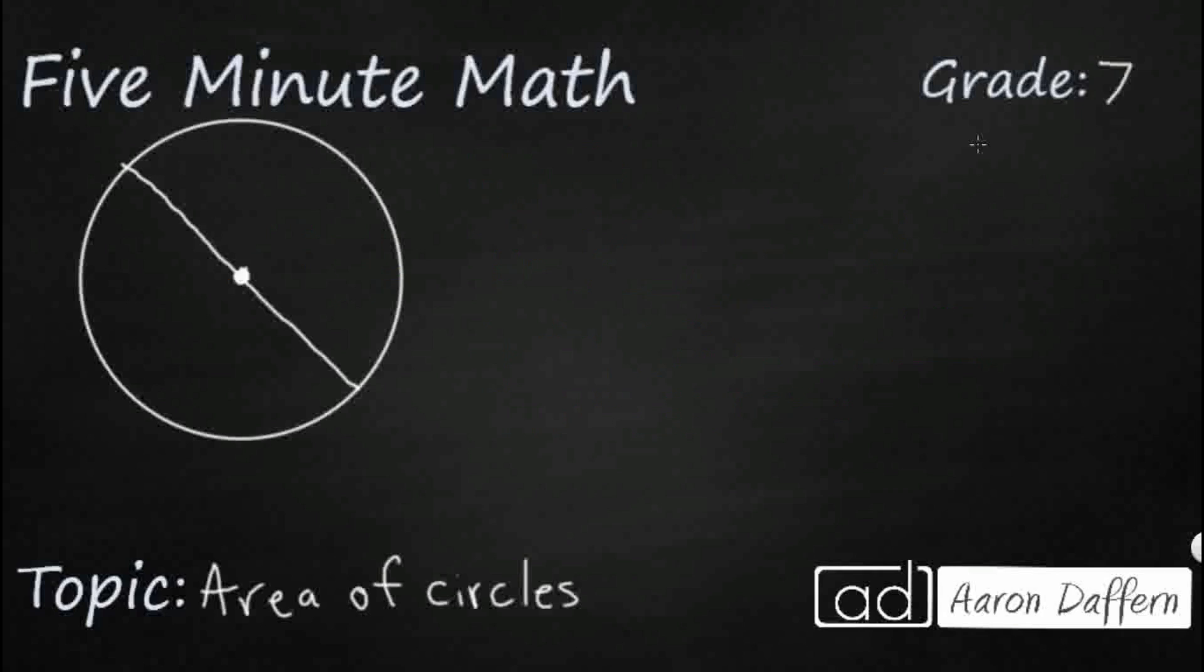Let's look at another example. So you might be asked to find the area of a circle, but all you're given here is this measurement. Now remember, this is not the radius. This is the diameter. And remember, the diameter is just double the radius. So I've got a radius here and then I've got another radius right here.